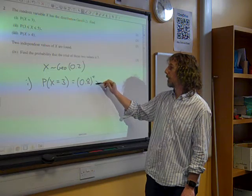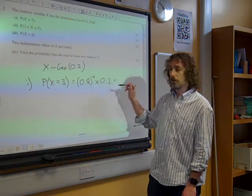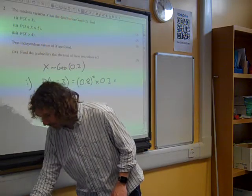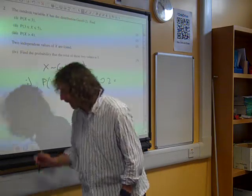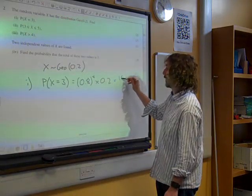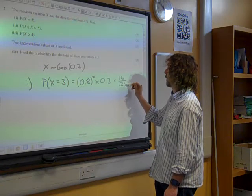0.8 squared times 0.2, which is 16 over 125. Yes, brilliant.